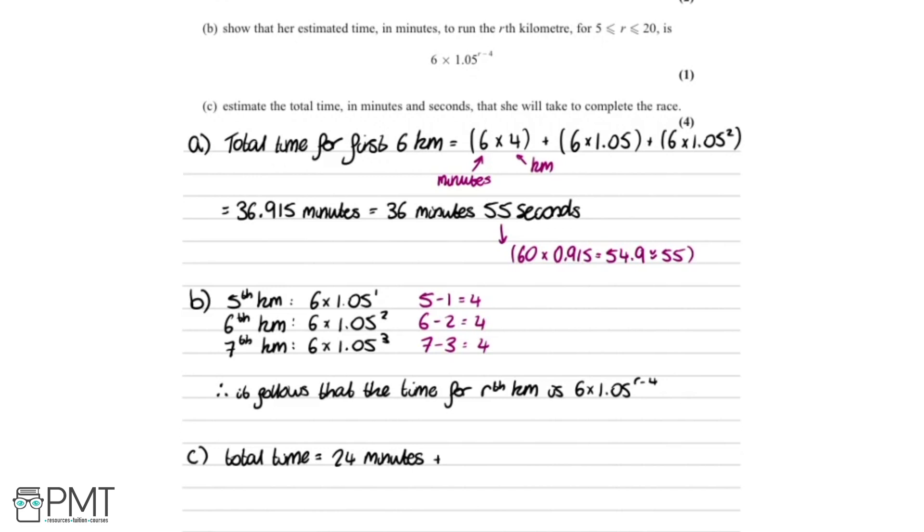And then we're going to add on top of that, and we're going to use the general formula that we created in the previous part. So if we do the summation of that formula, 6 times 1.05 to the power of r minus 4, and the first 4 kilometers we're already taking care of here. So for this summation we want to go from r equals 5 because we look at the 5th kilometer, and it's a 20 kilometer race, so we want to go up to 20 kilometers here.